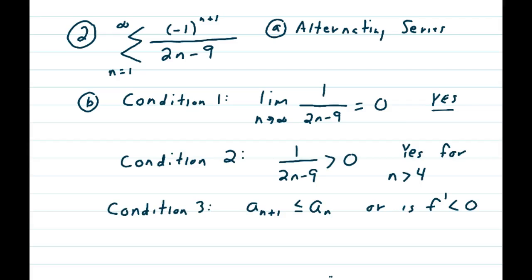Moving on to conditions 2 and 3, second condition is pretty easy to do. You look at 1 over 2n minus 9, the function involved here, and say, is this greater than 0? And it is, as long as you go bigger than the number 4. So it doesn't have to be true for every single n, it just has to be true for some n and larger n's.